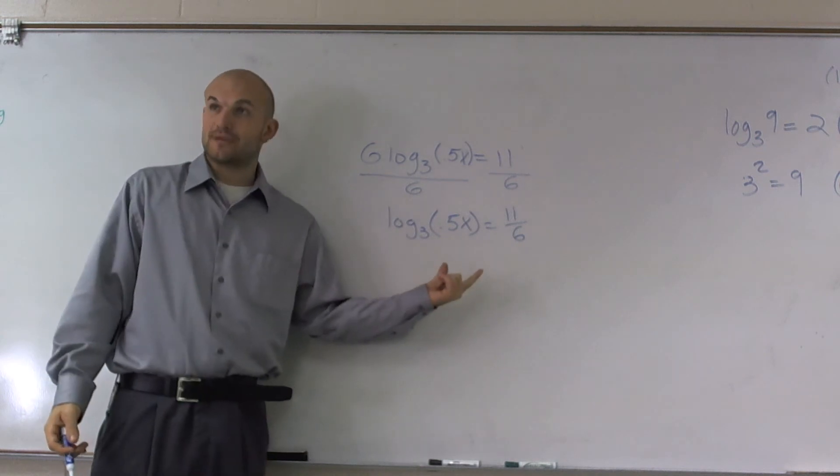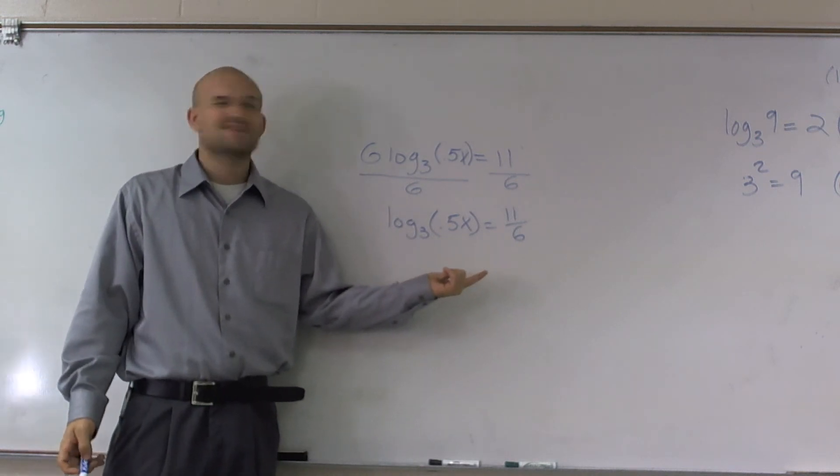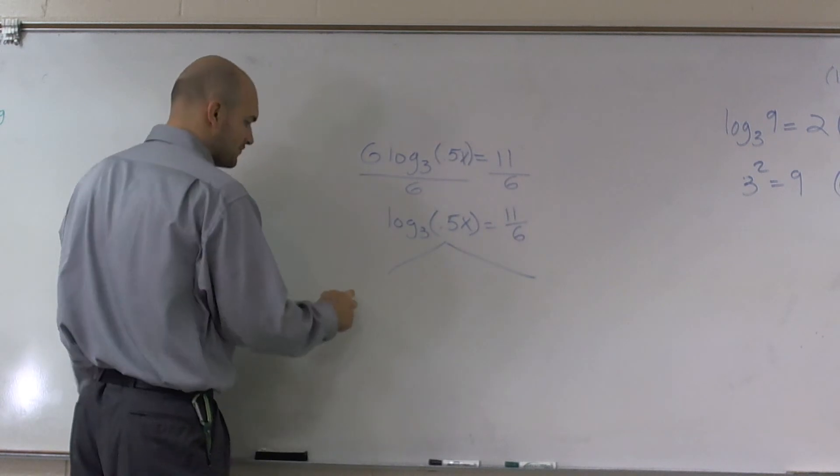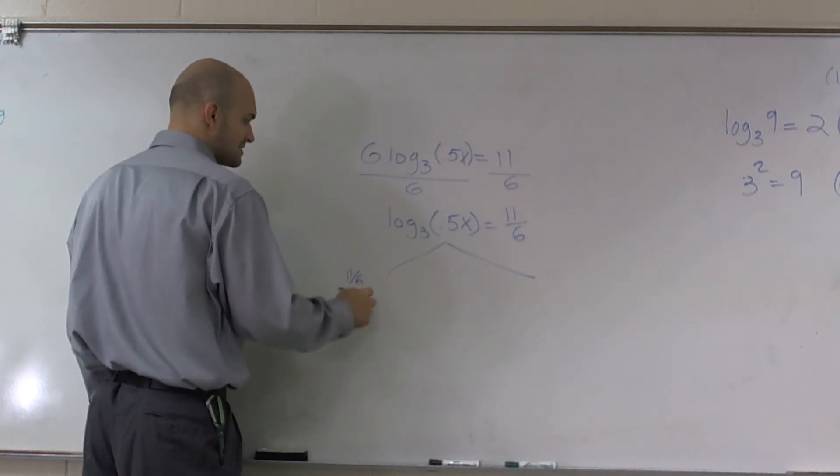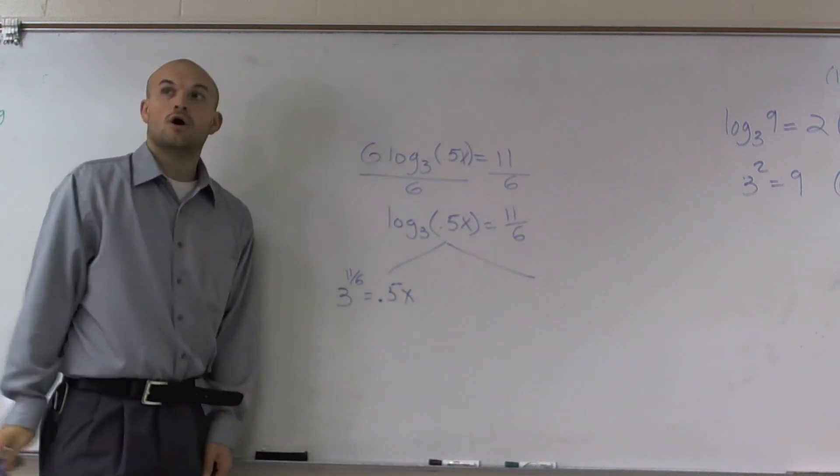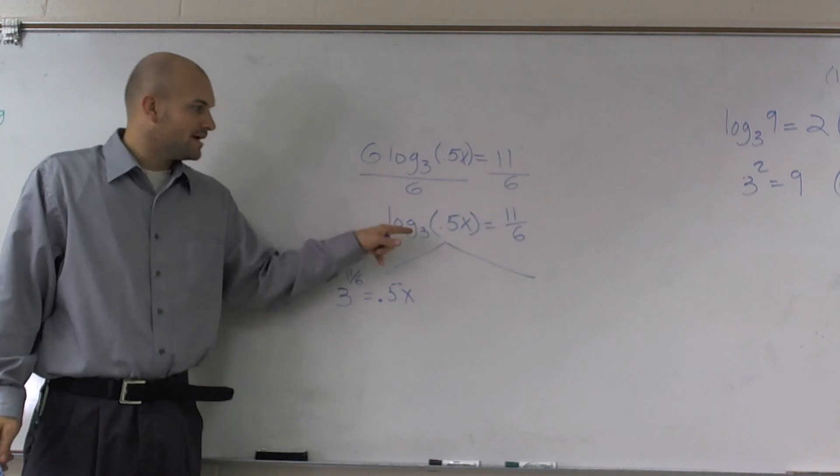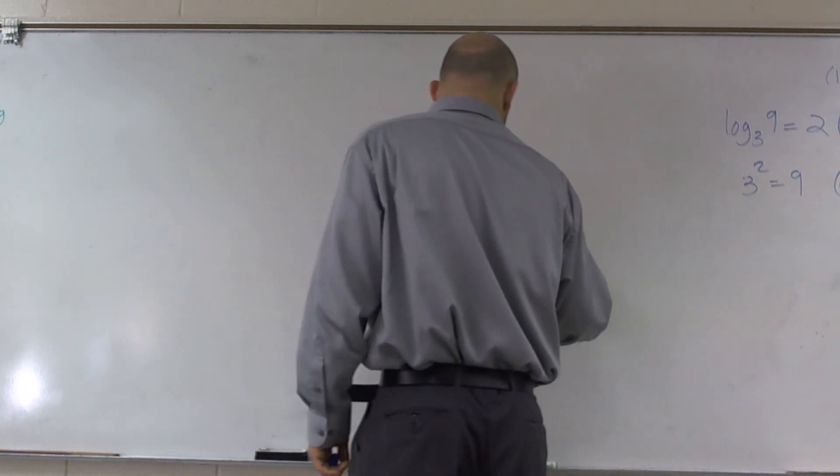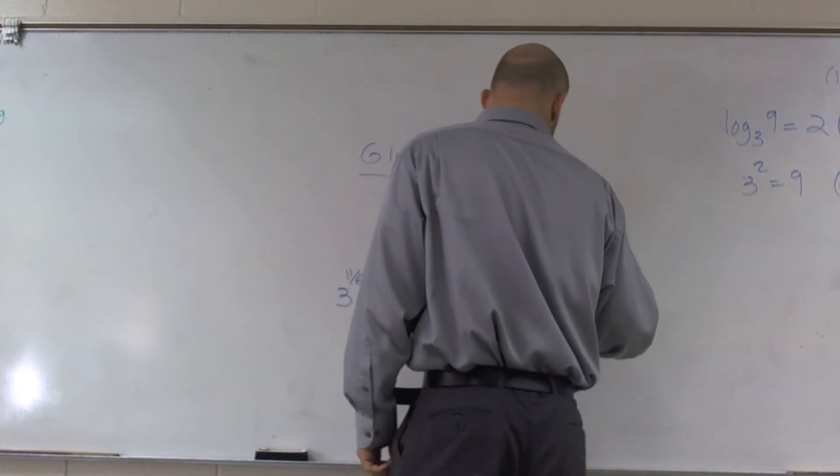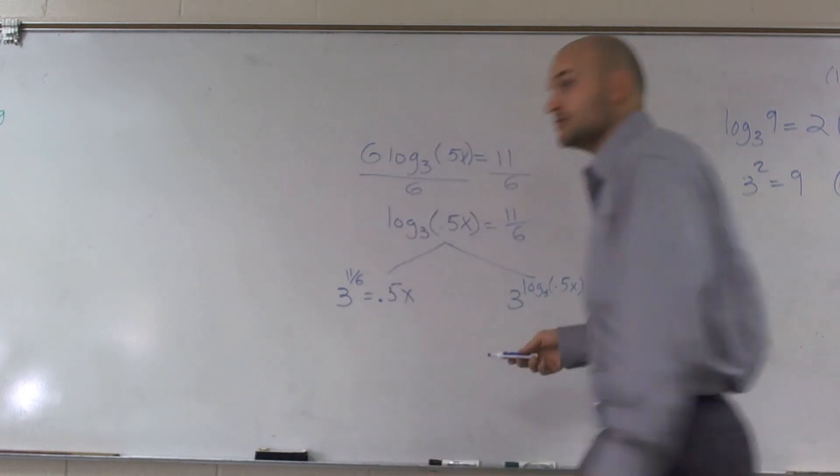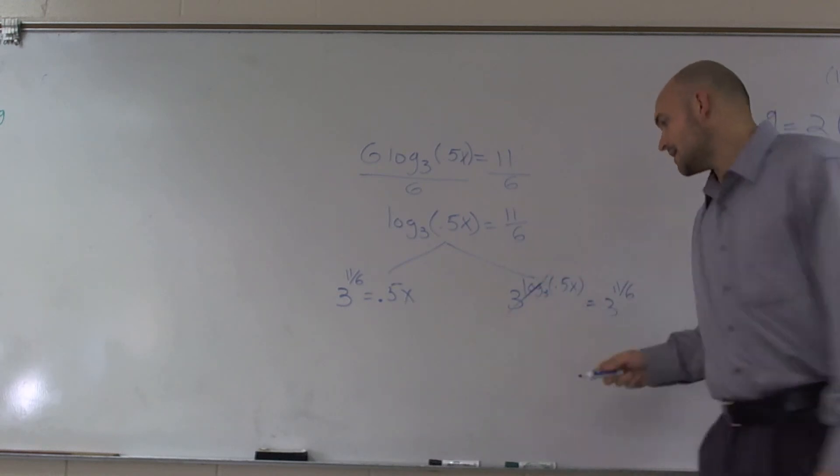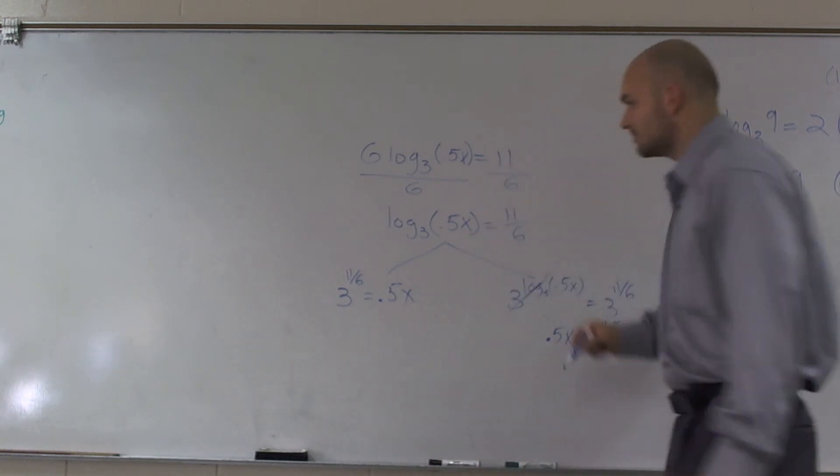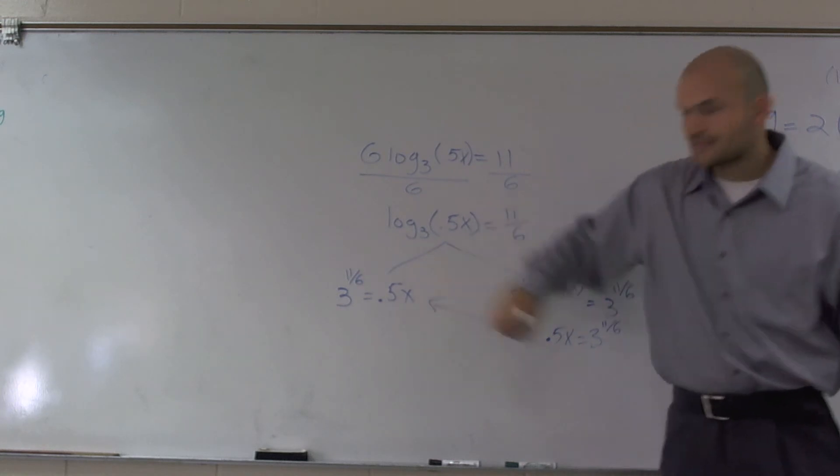Then, now I can transfer this to exponential form if I wanted to. How about I do it both ways? So if I transfer this to exponential form, it is 3 to the 11 over 6 equals 0.5x. Or you can exponentiate each side. If I raise both of these as a base 3, so if I say 3 raised to the log of 0.5x equals 3 to the 11 over 6, by using my inverse properties, I know that cancels out. And it just leaves me 0.5x equals 3 to the 11 over 6, which I get the exact same answer.